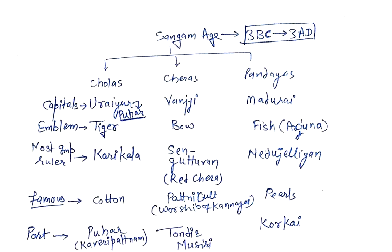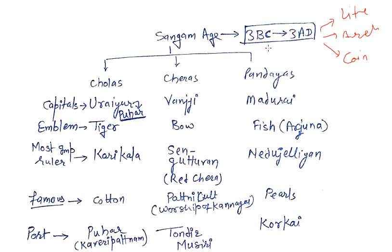In this video we are going to discuss the Sangam Age. What is the Sangam Age, what is its time period, and why do we call it the Sangam Age? The time period of the Sangam Age is from 3 BC to 3 AD, based on various sources like literary sources, archaeological sources, and coins found in excavations.